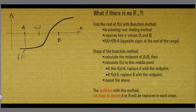We want to find the x value where f crosses the x-axis. The procedure is simple: we calculate the midpoint of a and b, then we calculate f(x) at this midpoint.